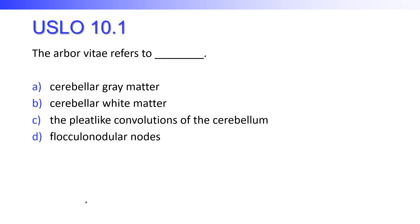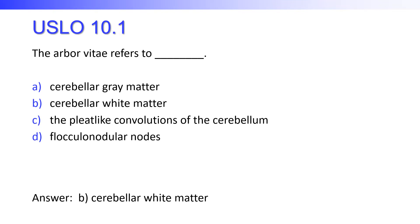The arborvitae refers to cerebellar gray matter, cerebellar white matter, the pleat-like convolutions of the cerebellum, or the flocculonodular nodes? Hopefully you said the cerebellar white matter. When you take the cerebellum and cut a section of it away, there is white matter located within there that looks like a tree — arbor refers to tree.